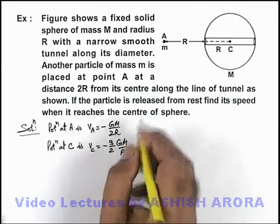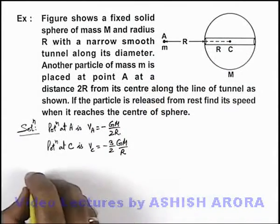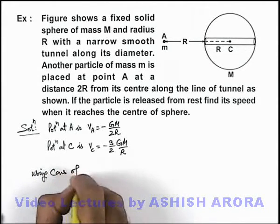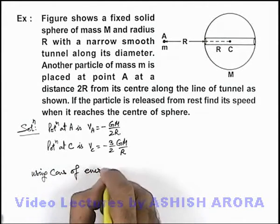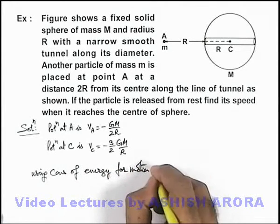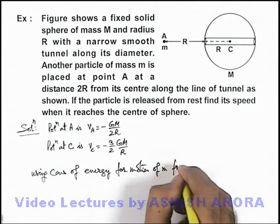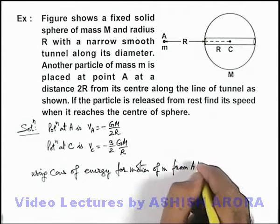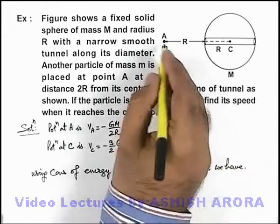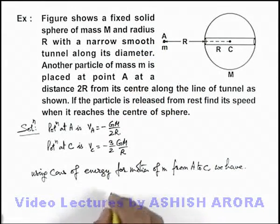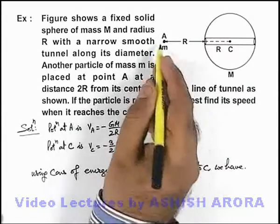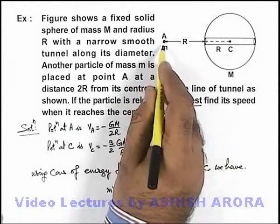As the particle is moving from A to C, using conservation of energy for motion from A to C, we have: at point A it was having potential energy as mV_A only, and as it was released from rest, no kinetic energy was there.